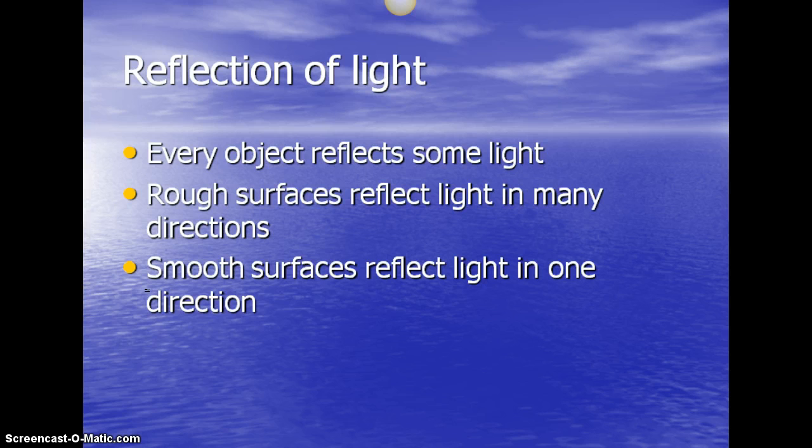Reflection of light. Every object will reflect some light. Rough surfaces reflect light in many directions. So you can put that in, make sure you have that in. And an example of that would be that light would come in, but then on the way out, it's going in all different directions.